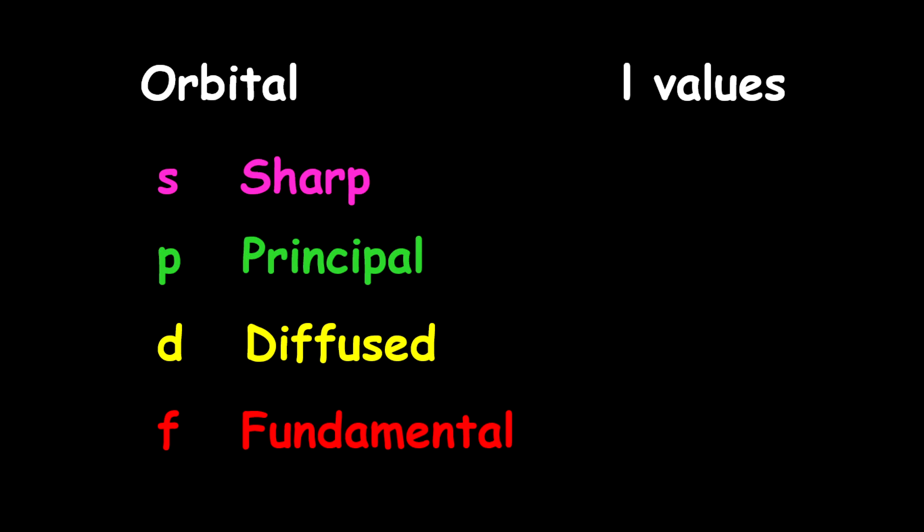We also need to know the L value that is assigned to each of these orbitals. For the S it is zero, for the P orbital the L value is one, for the D orbital the L value is two, and for the F orbital the L value is three. These values are very unique and very important for us to know.